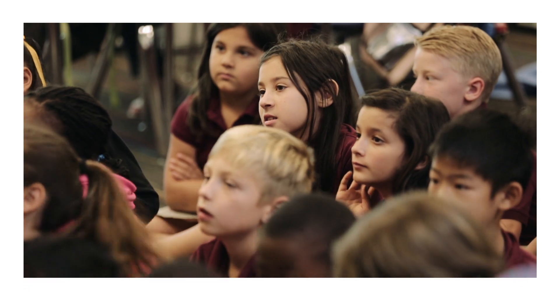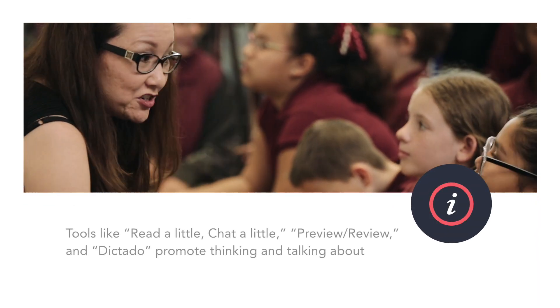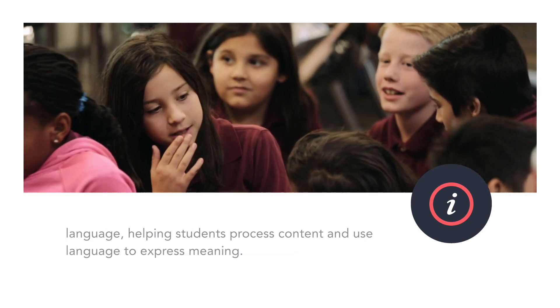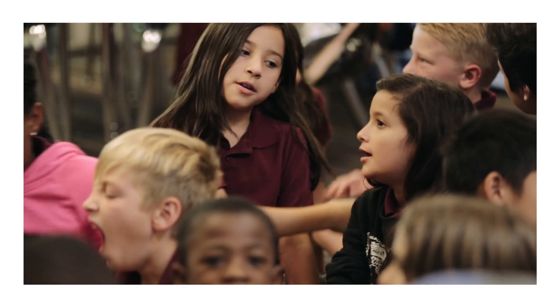We started out today by reading a book called 'Renee Has Two Last Names.' As we read that book, we really did the 'read a little, chat a little' structure so that students had an opportunity to process content throughout. After we found out the major events and the challenges the character was encountering, we moved to more of a small group setting. The Dictato is a wonderful metalinguistic tool to help students see the patterns across language.